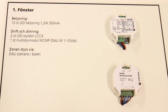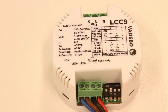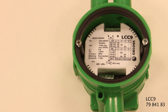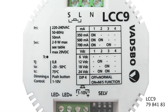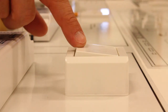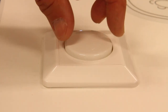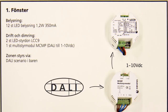LED control gear is a combination of a LED driver and LED dimmer in one device. LED control gear LCC9 can operate and dim LEDs up to 9 watts and can be placed in a wallbox. LCC9 can be set with DIP switches for constant current: 350, 500, and 700 milliamps, respectively constant voltage 12 and 24 volt. LCC9 is controlled by a momentary push button or a 1 to 10 volt control device and can be used in the DALI system with a converter from DALI to 1 to 10 volt, such as multi control module MCMP.